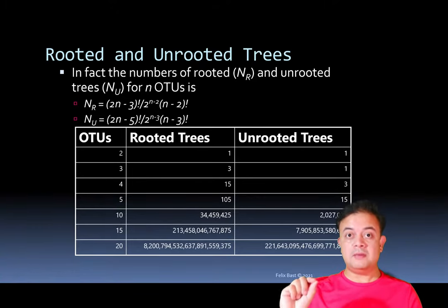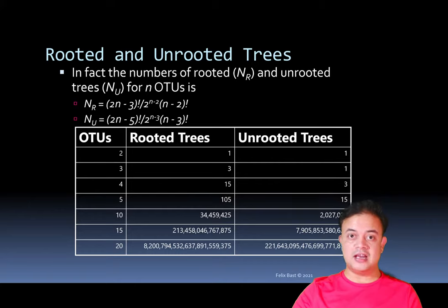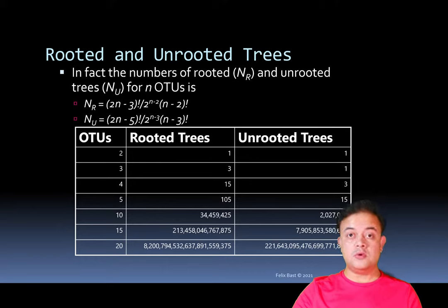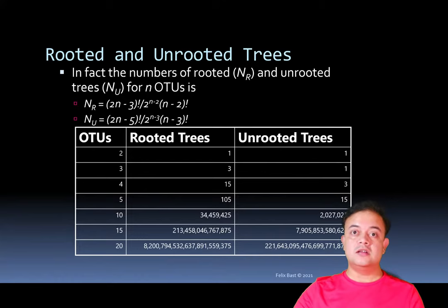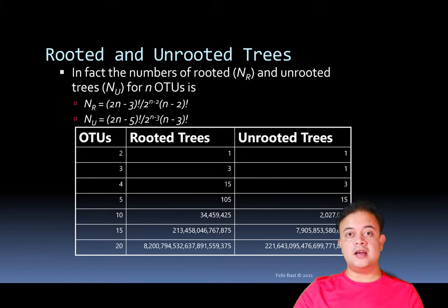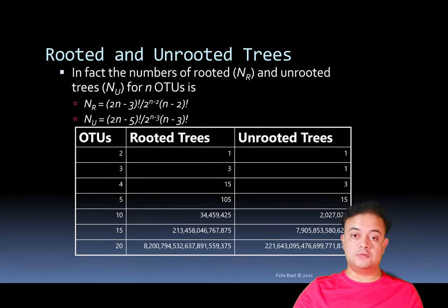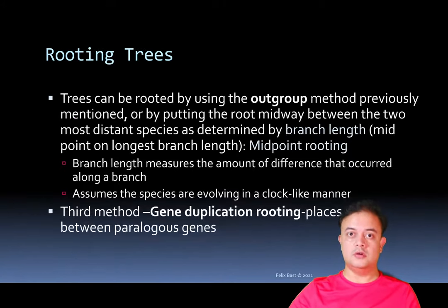To select the optimal tree, you assess PP (posterior probability) values or bootstrap proportions using maximum likelihood or maximum parsimony. You don't have to check all trees individually — software does that for you using computational heuristics. Several heuristic algorithms, like MCMC (Markov chain Monte Carlo) simulation, can be used to select the most optimal tree from among this enormous number of possibilities.